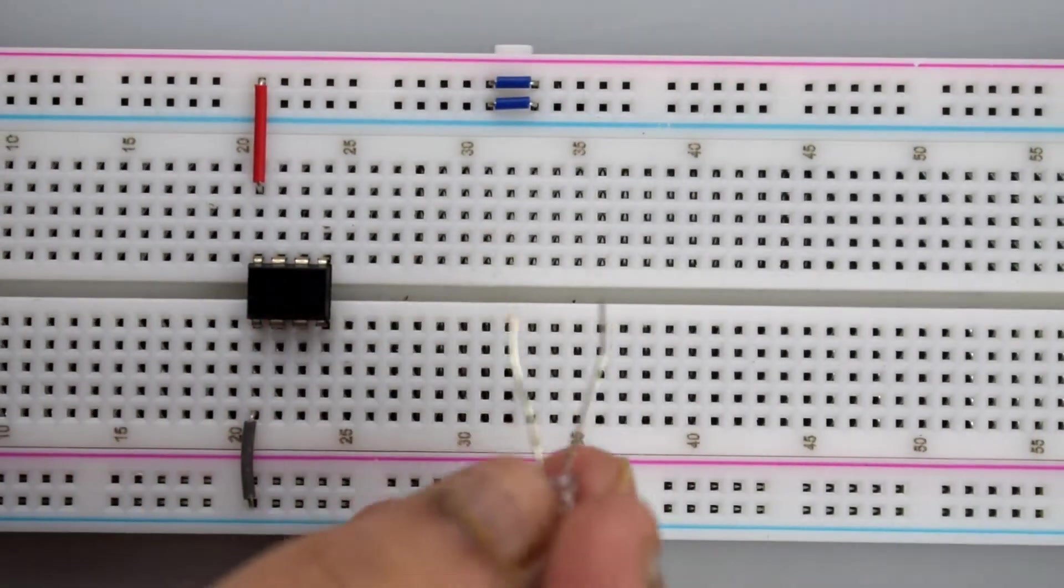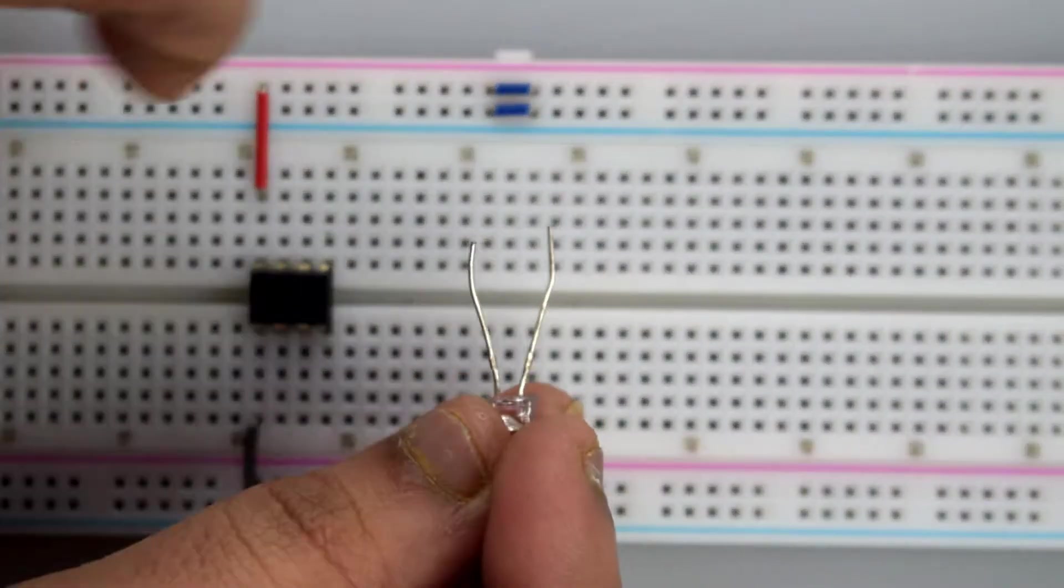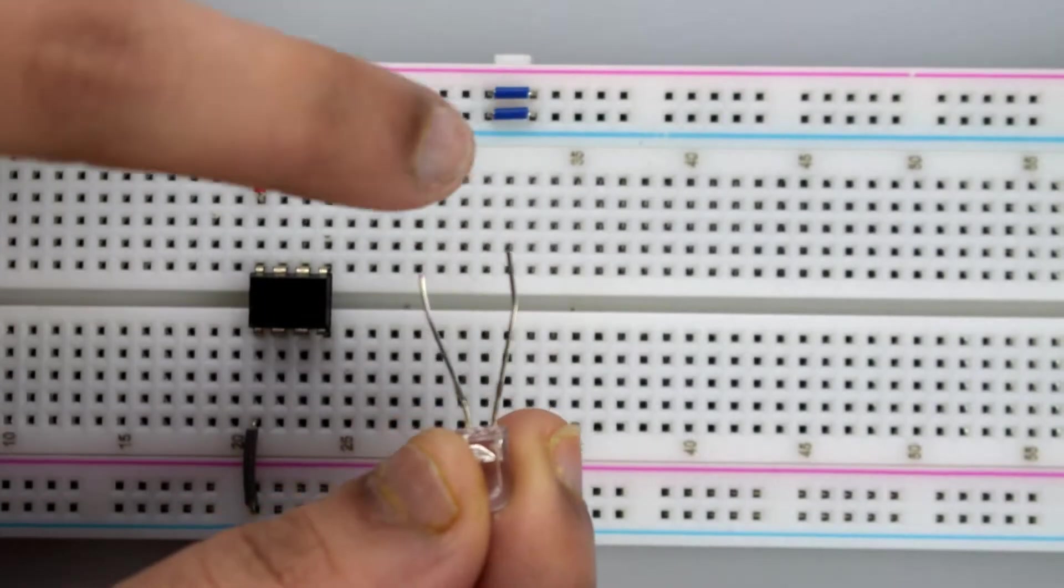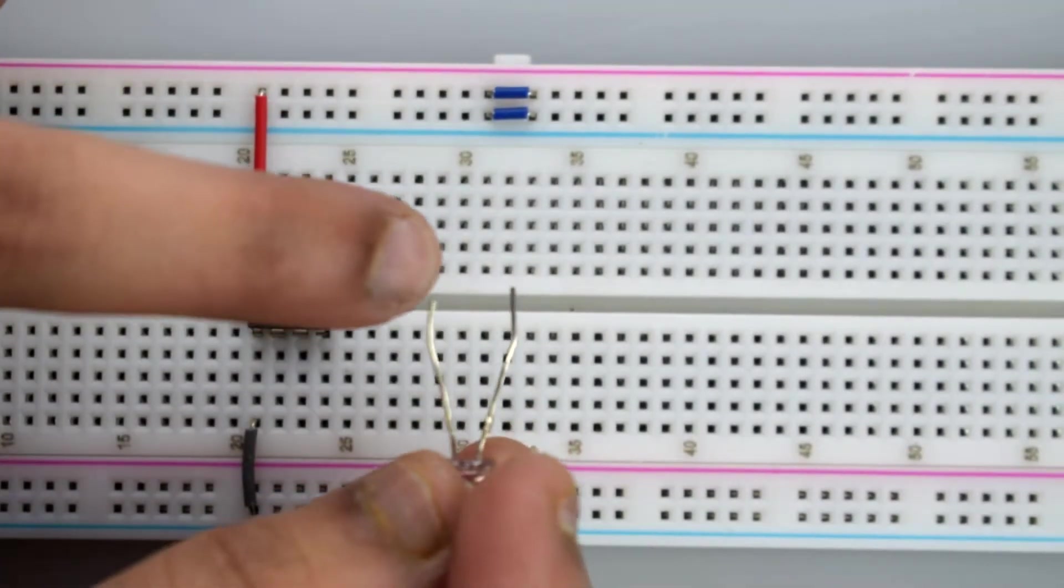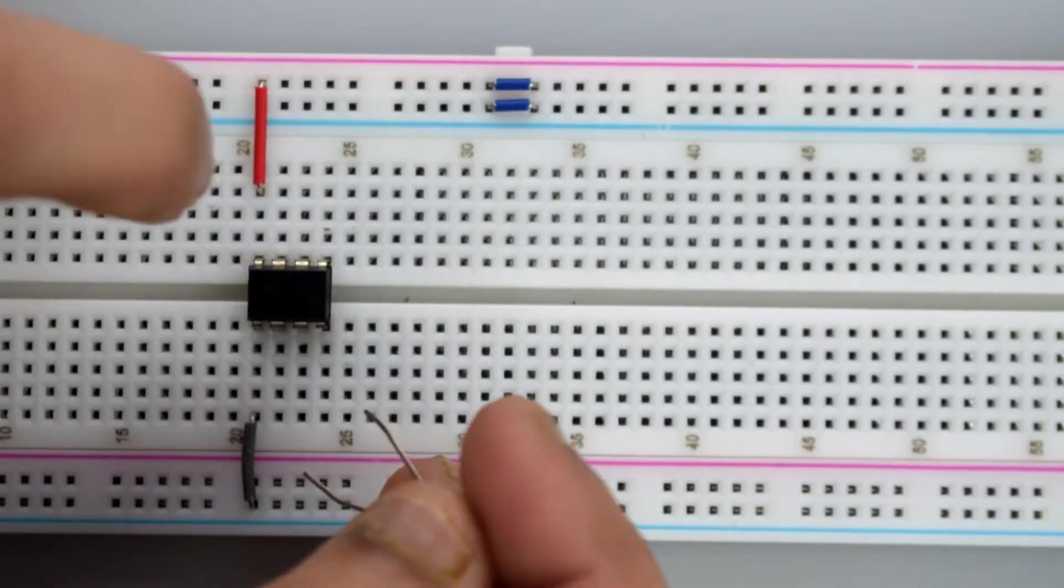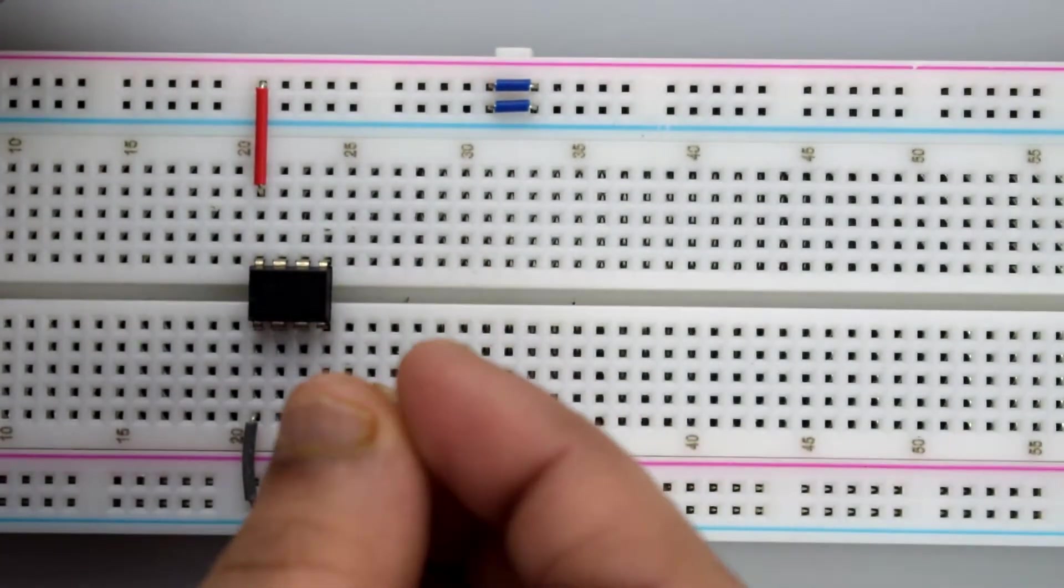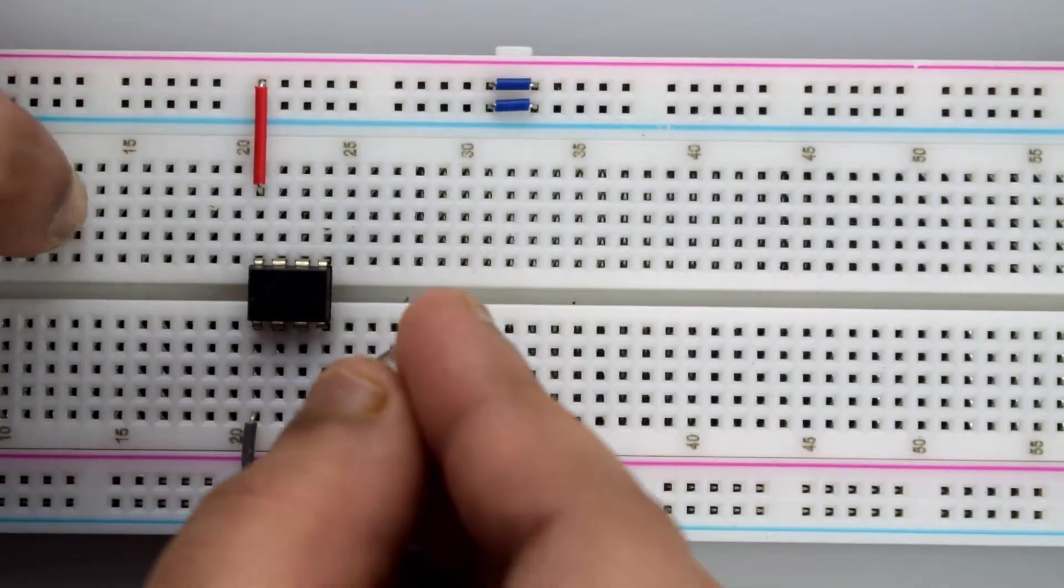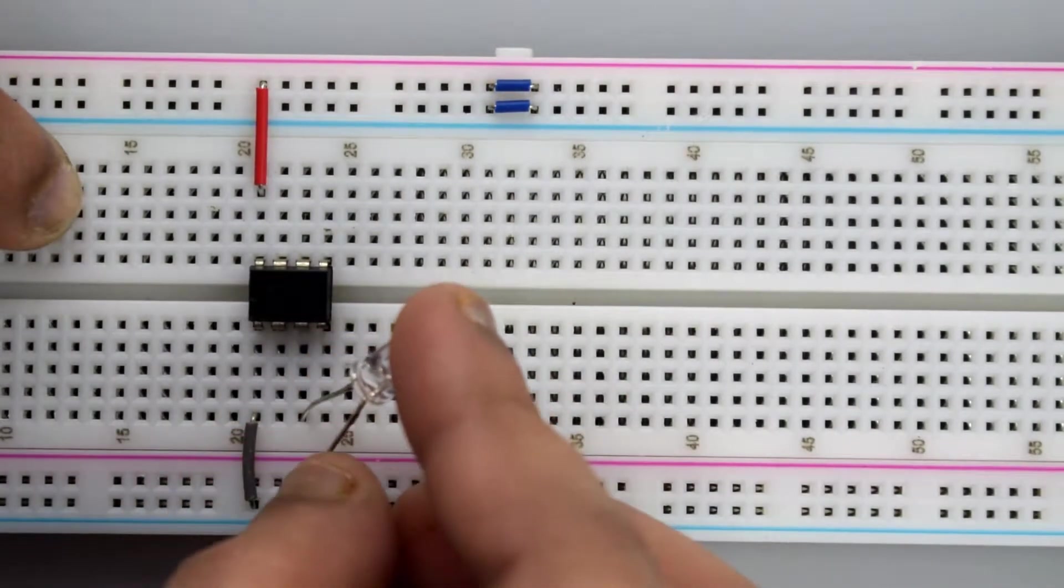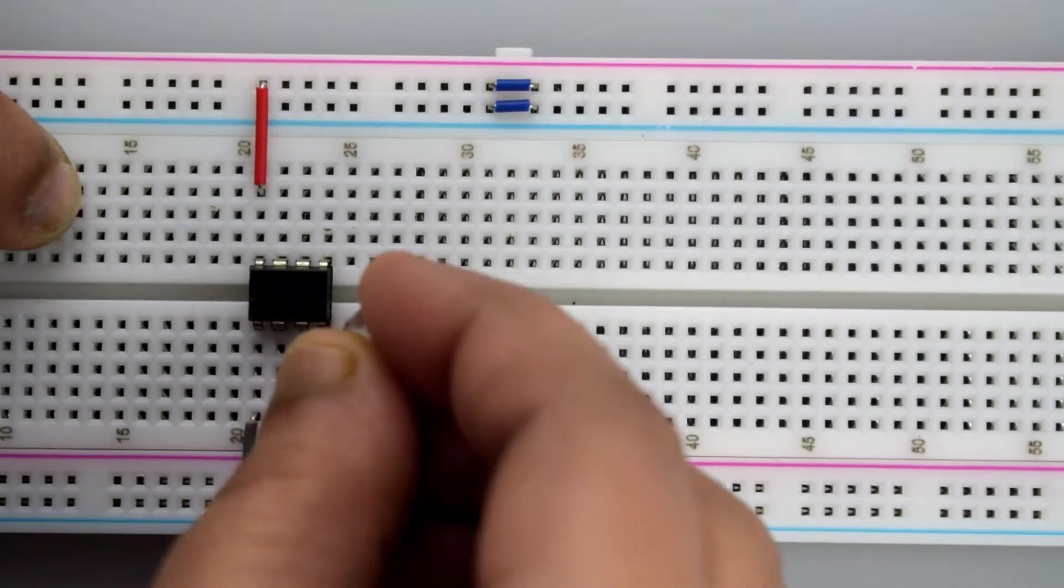Now connect an LED to the breadboard. The longer leg is positive and the shorter leg is negative. So connect the negative leg of the LED to the third pin of the 555 timer IC, and the positive leg to the positive rail on the breadboard.